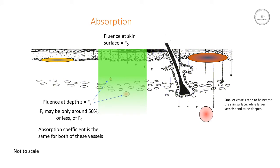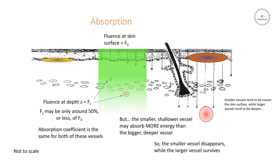If we have two vessels like we can see here, they'll have similar absorption coefficients, but the shallower, smaller vessel will absorb a certain amount of energy which may be sufficient to destroy it. The deeper vessel, because it's at a deeper position within the skin, will absorb less energy simply because less of the fluence has reached that depth. As a consequence, it may well survive this treatment.